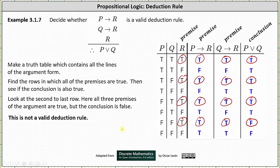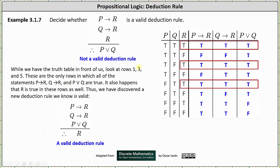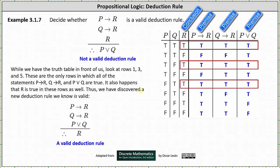If we analyze the truth table further, we can draw a different conclusion. Rows one, three, and five are the only rows in which all of the statements — if p then r, if q then r, and p or q — are all true. It also happens that r is true in all these rows as well. Thus the table does show us a valid deduction rule: if p then r, if q then r, p or q, therefore r is a valid deduction rule, which we can verify from our truth table.